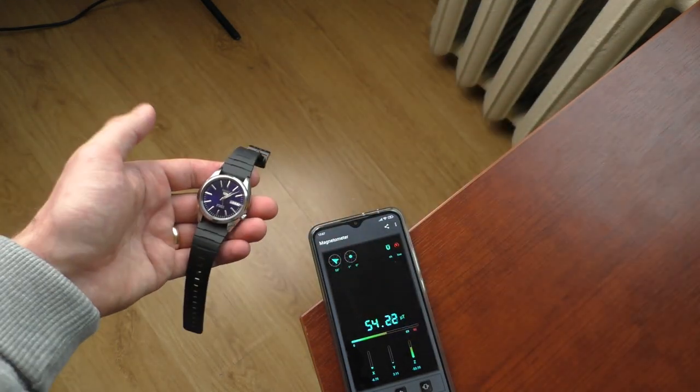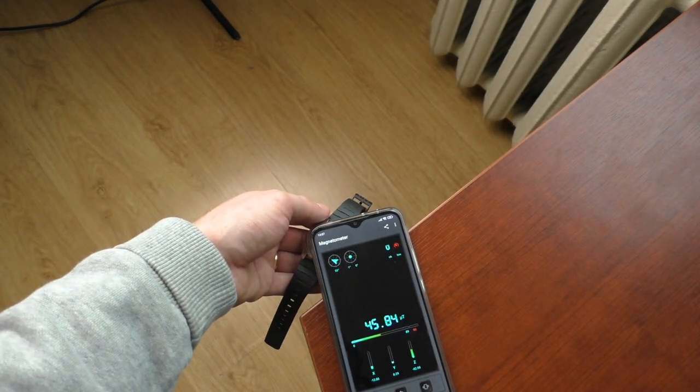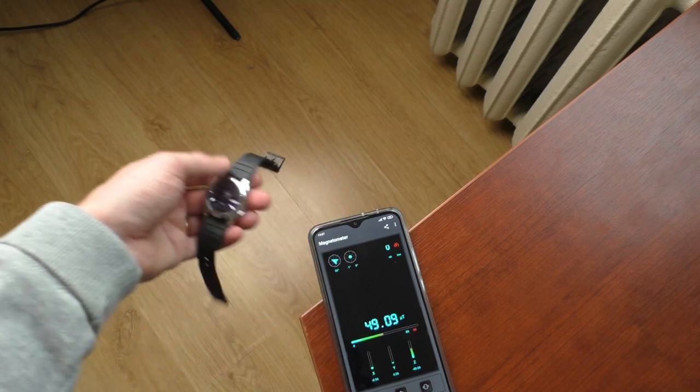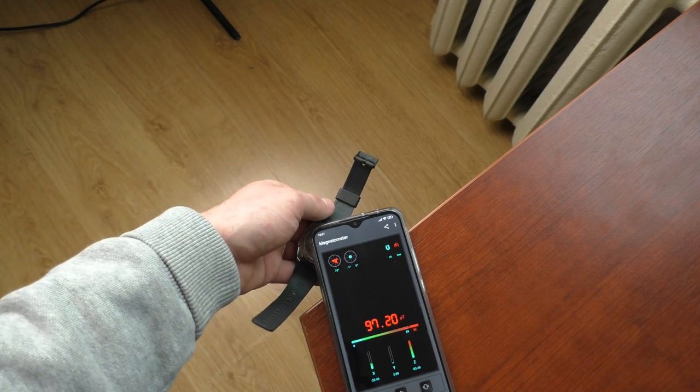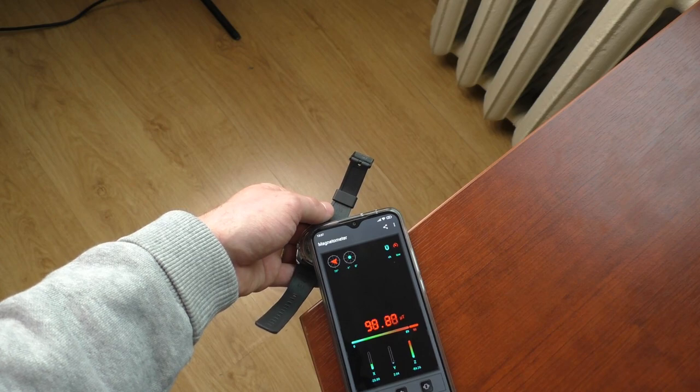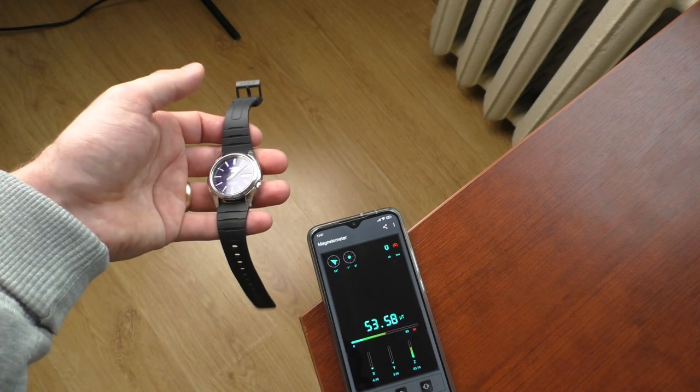Now let's put the Seiko 5 face up. Not much of a difference. Let's put it face down and oh, we have red numbers. So yeah, it's magnetized.